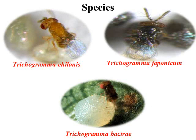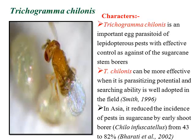Trichogramma chilonis is very famous for all kinds of lepidopteran pests in sugarcane, cotton, and other vegetables. Trichogramma japonicum is very popularly used in rice ecosystems, while Trichogramma bactrae is very popular for use against the pink bollworm from the last 2 to 3 years. Trichogramma chilonis effectively controls mostly sugarcane stem borer complex, cotton borer complex, and even Helicoverpa armigera as a fruit borer or pod borer in pulses and vegetables. Trichogramma chilonis has a shorter ovipositor than Trichogramma japonicum.